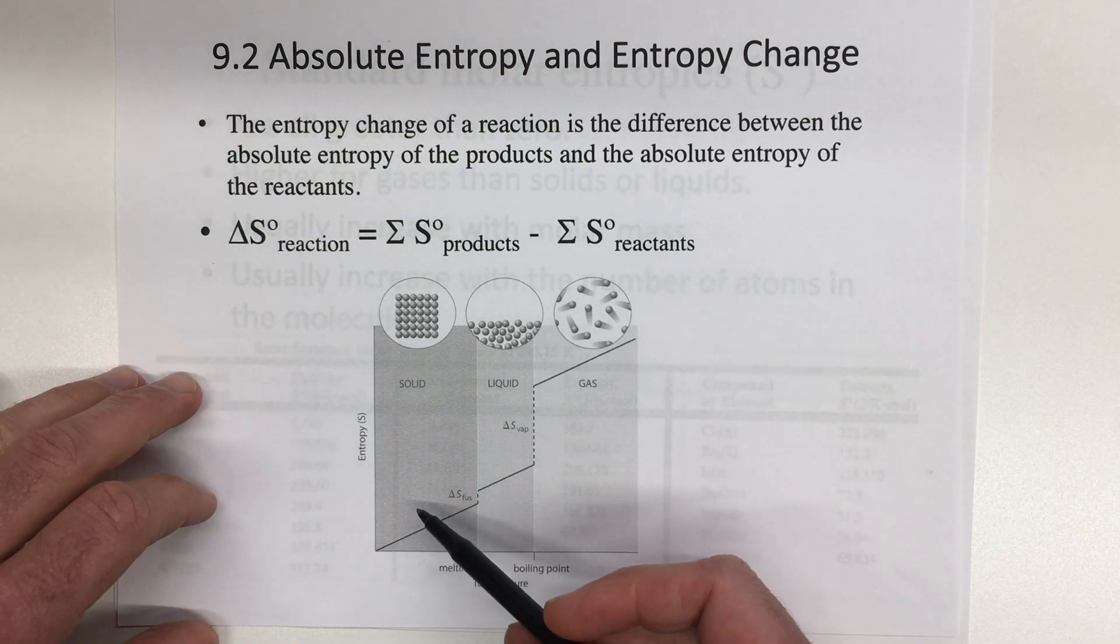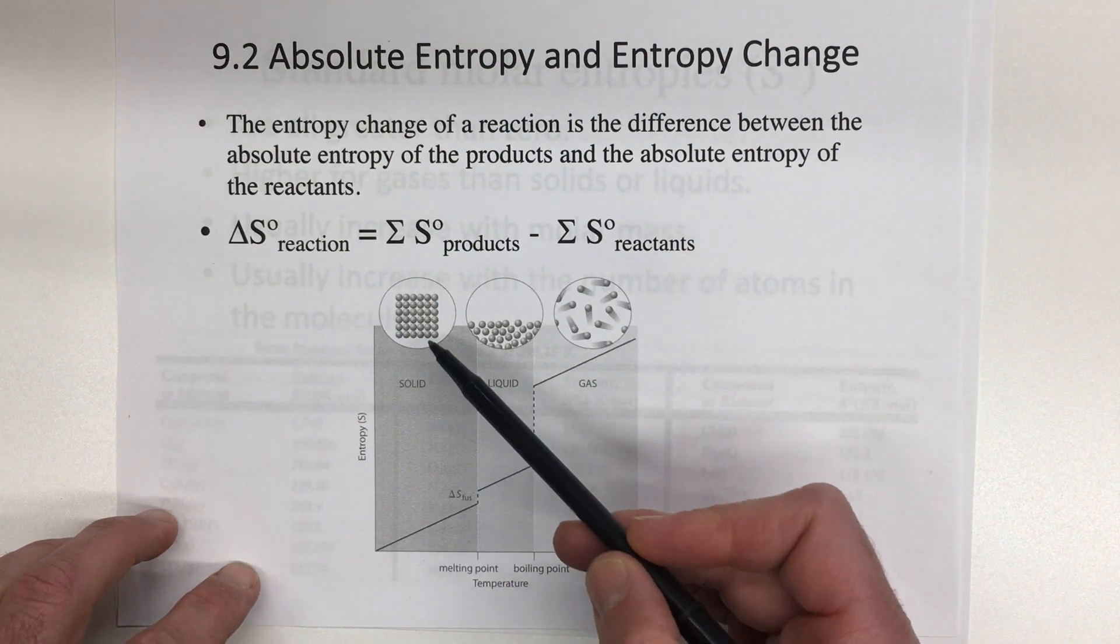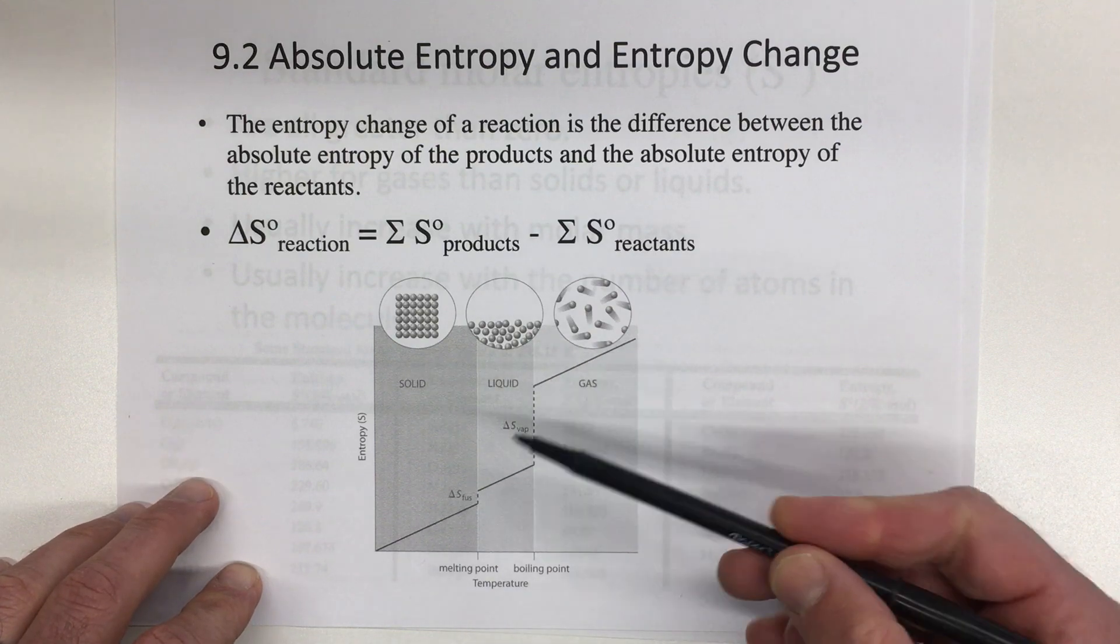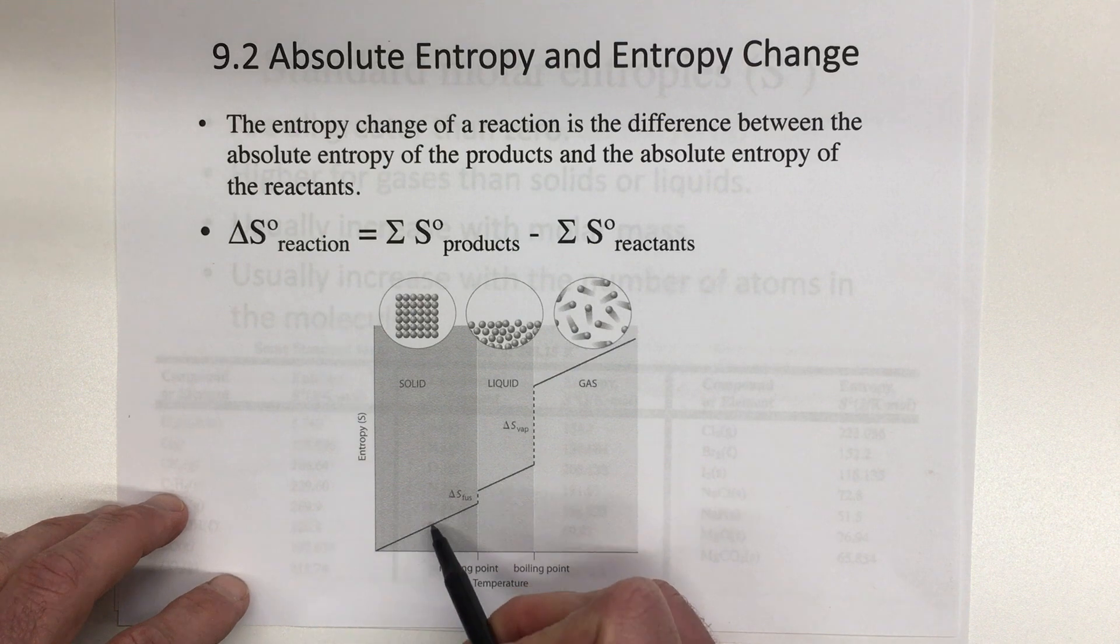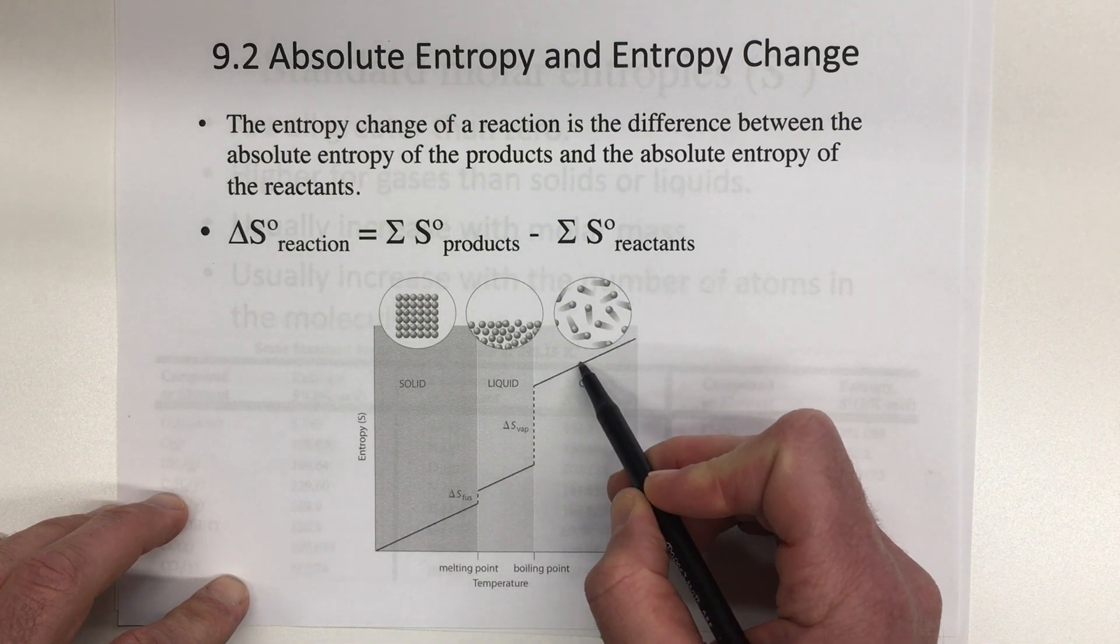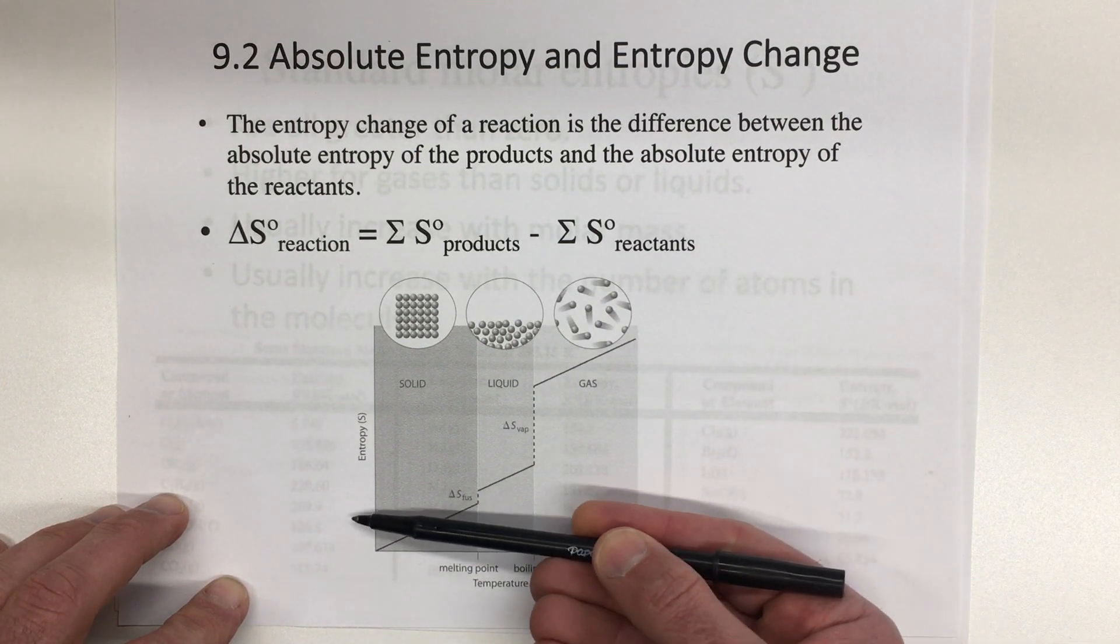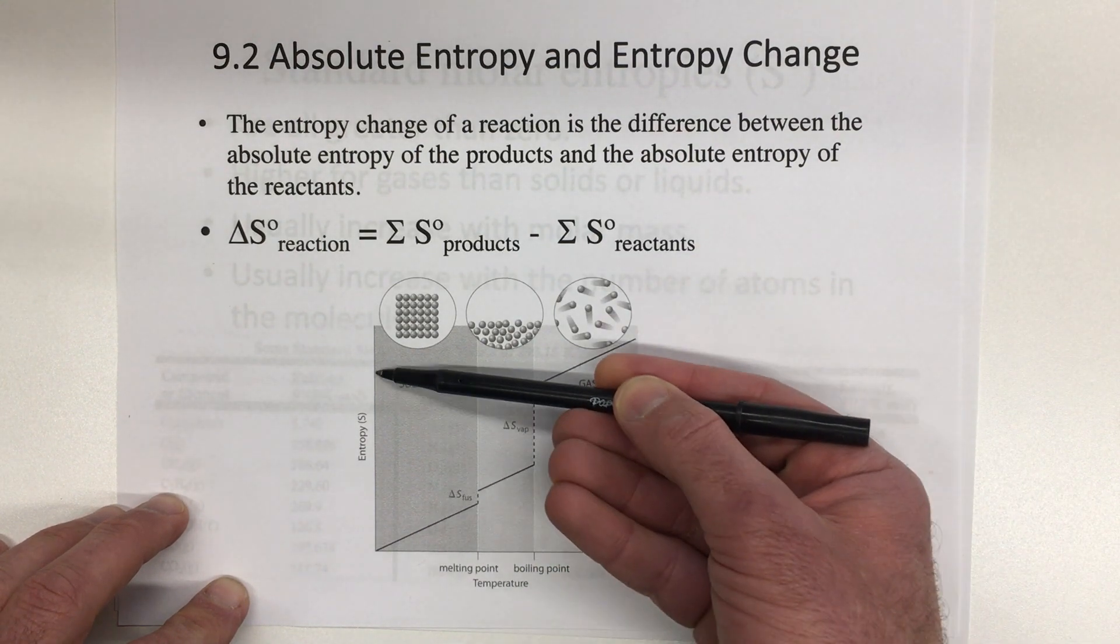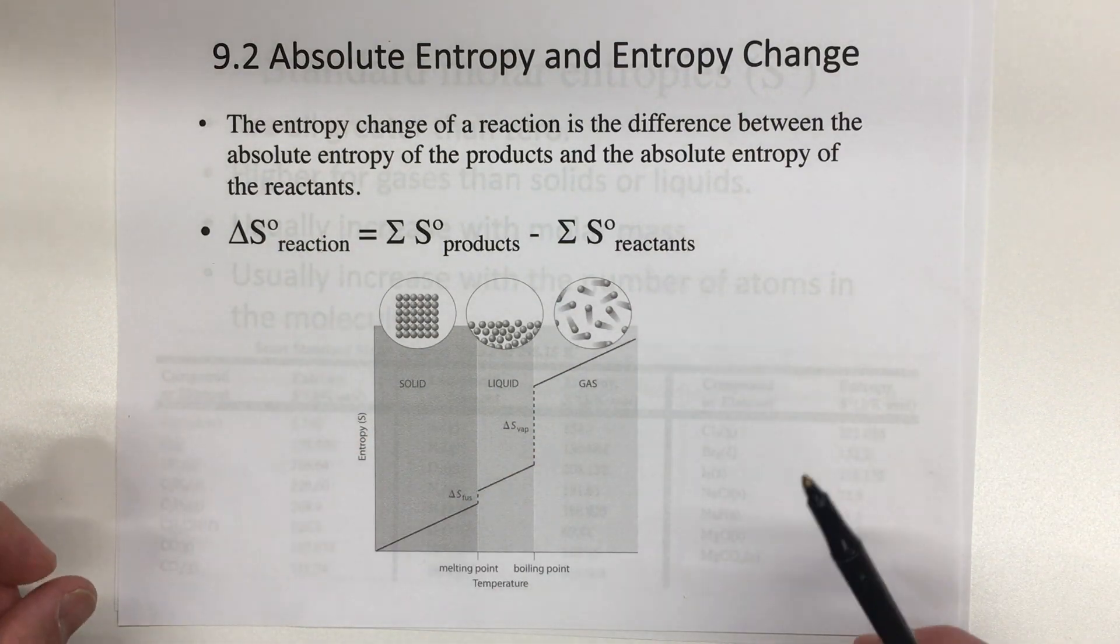And so here's a graph showing the entropy of solids, liquids, and gases. We know that as you go from a solid to a liquid to a gas, you increase the entropy. And if we know where we're starting, say you started a solid right here at this temperature, and at the end you had a gas at this temperature, that difference between the entropy here at your solid and here for your gas, that would be the overall entropy change for the reaction.